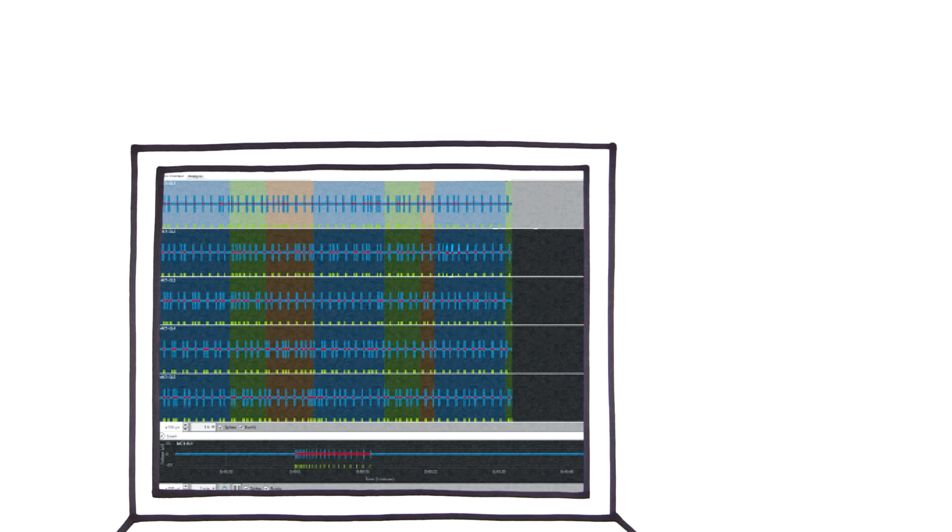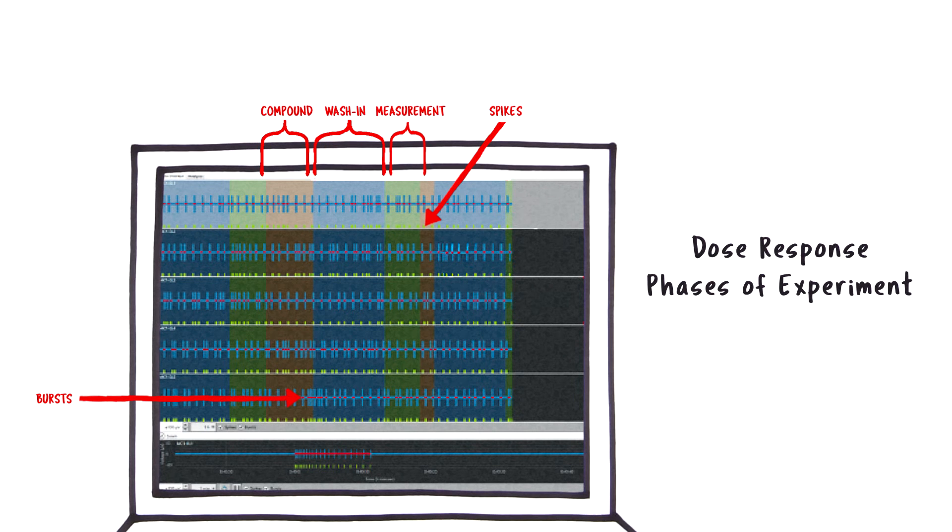After I hit record, BetaScreen starts to look for spikes and bursts for specific analysis that indicate dose response as well as the various phases of the experiment.